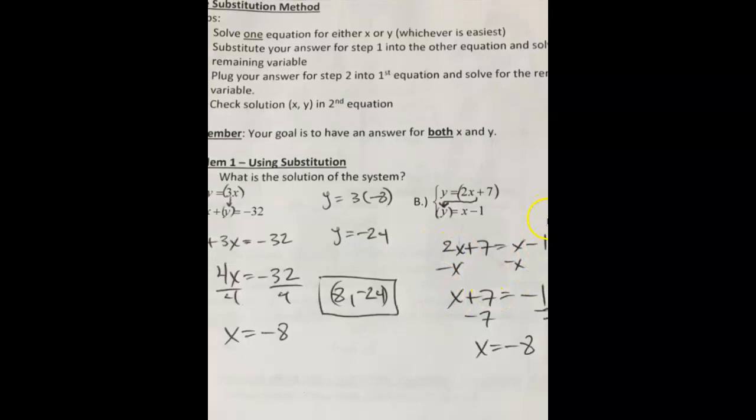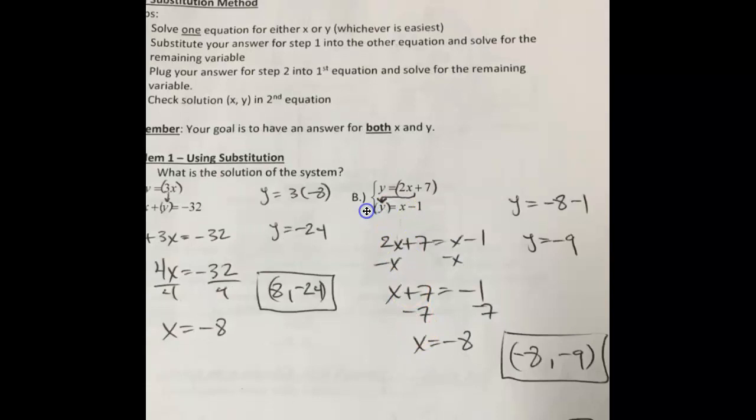On this next one over here, I actually have y isolated in both equations — top and bottom. Since y equals 2x plus 7 and y also equals x minus 1, what I did was I took 2x plus 7 and substituted it, as the arrow shows, in for y to get 2x plus 7 equals x minus 1.